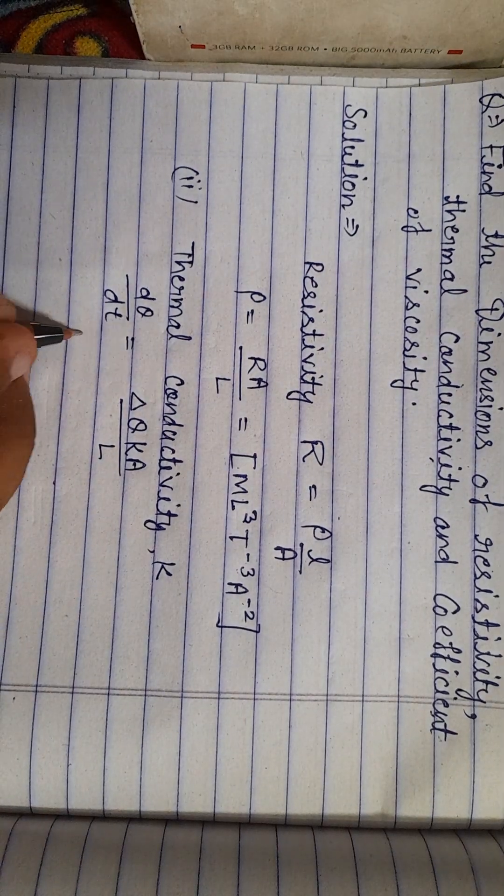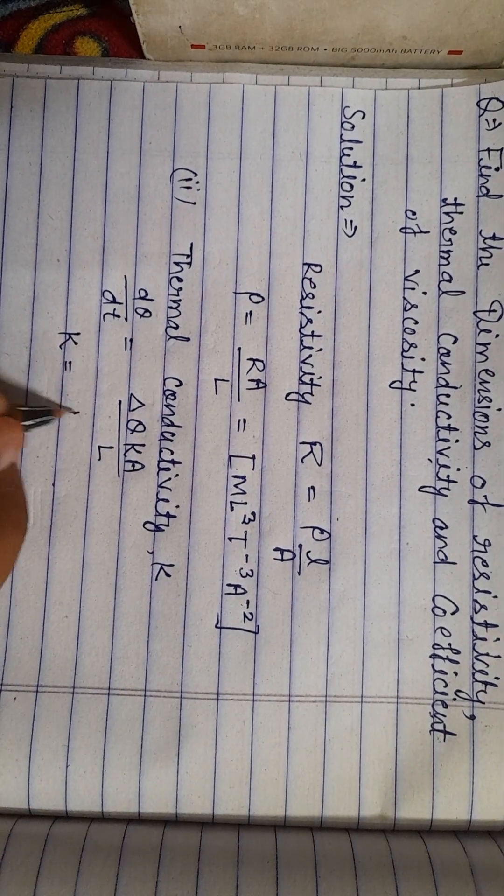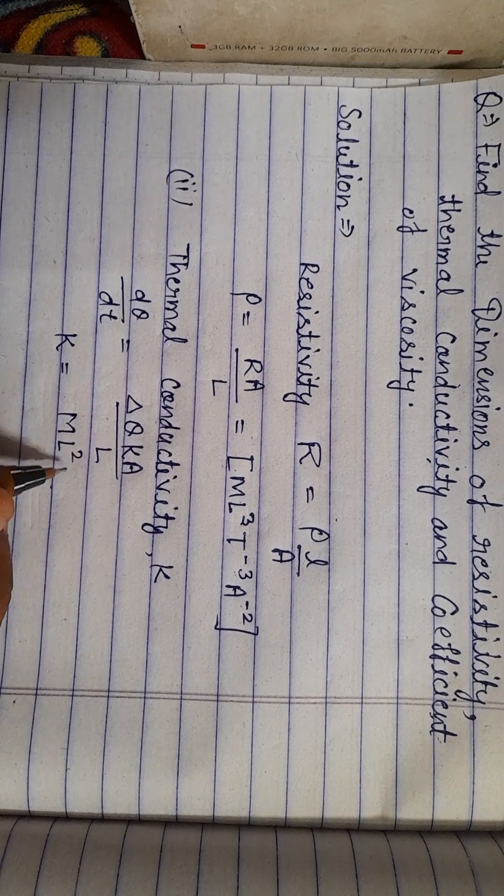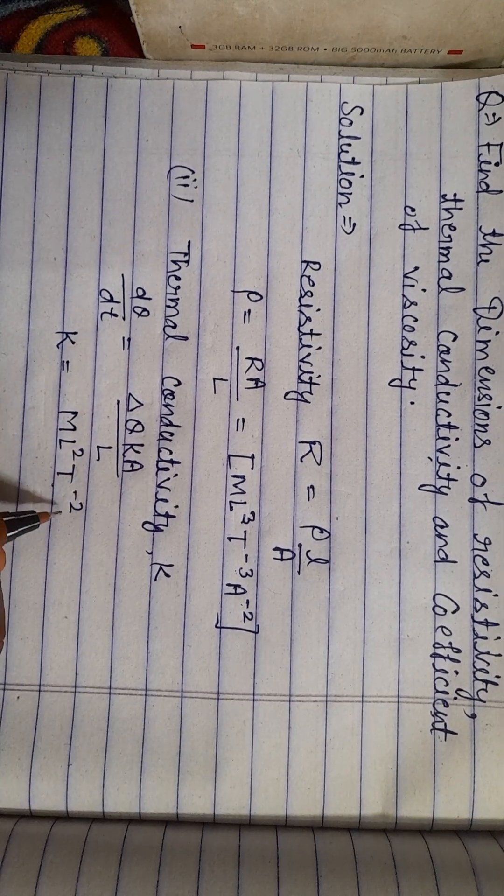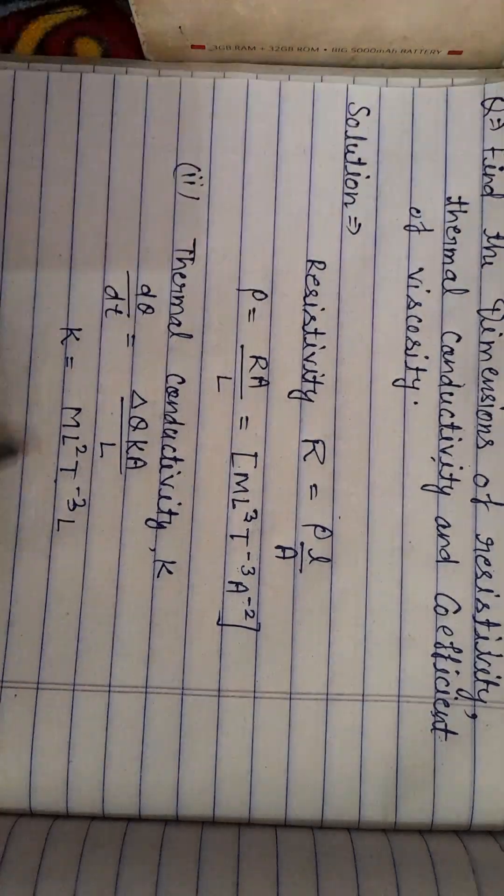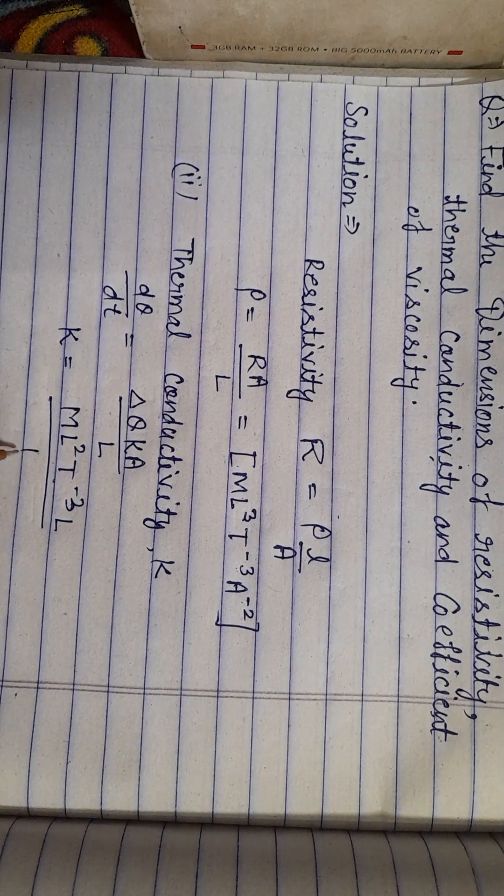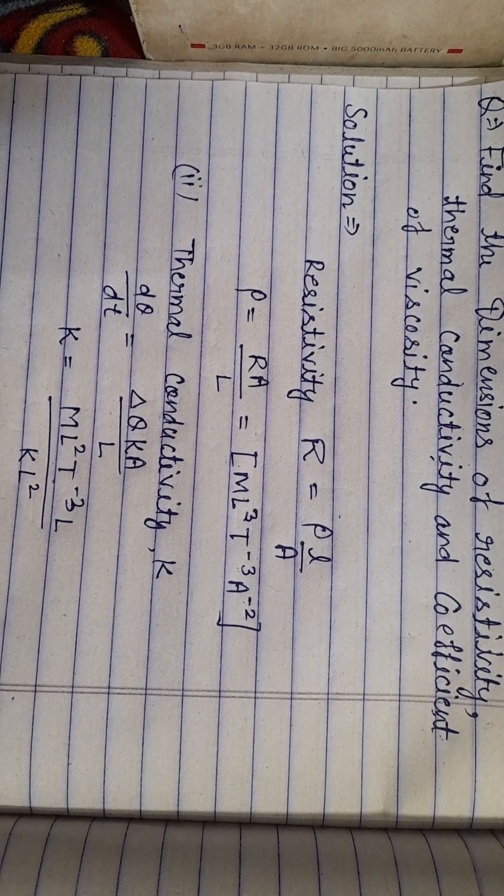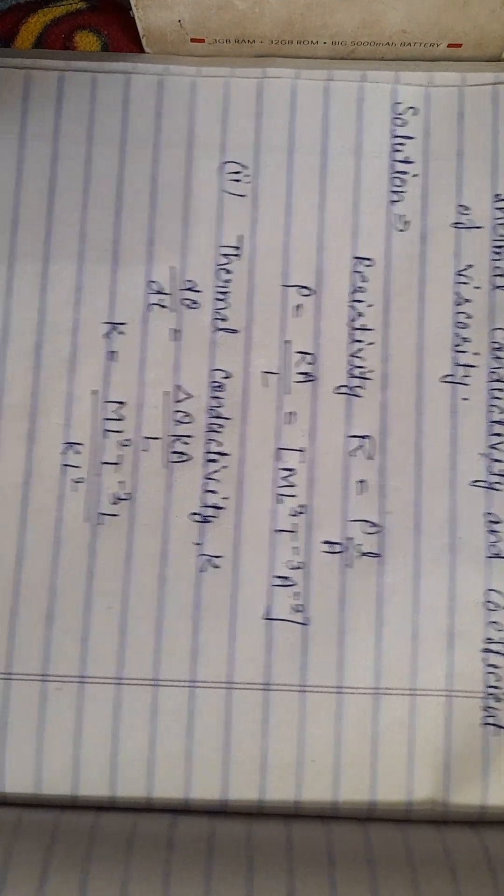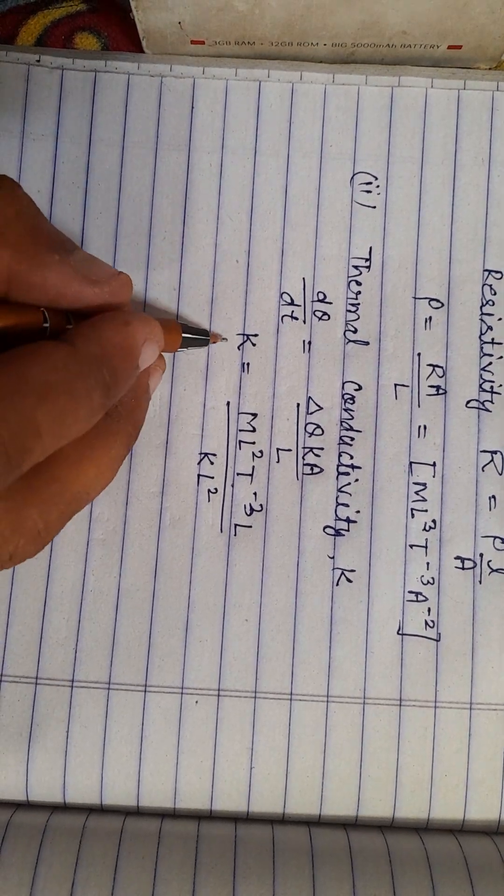From here you can find the value K. K is equal to M L squared T minus 2 T minus 2 T minus 3 L upon K L squared. Now let me write this down clearly.